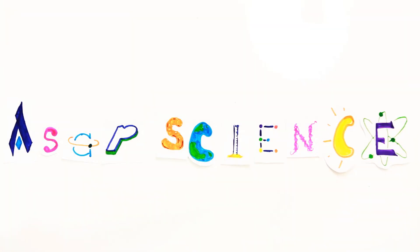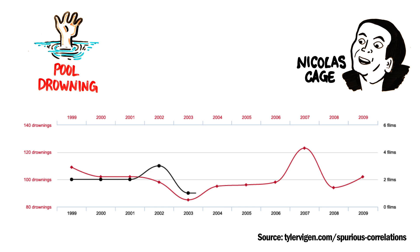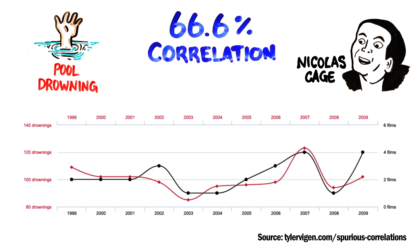Have you ever wondered how related the number of people that drown in pools each year is to how many Nicolas Cage films are released the same year? Turns out there is a 66.6% correlation between the two.